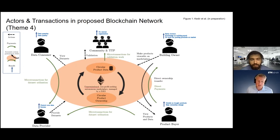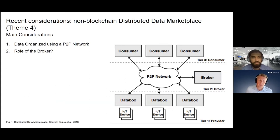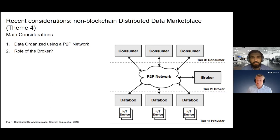We've also questioned whether blockchain is necessarily the right way to do this, given its significant environmental footprint. We've started thinking about perhaps a distributed database to create a distributed data marketplace. There's the data organization around a peer-to-peer network — examples would be the InterPlanetary File System or BigchainDB — so data is not stored on a central server but available to all who have rights to access it. We're also considering what the role of the broker would be in such a distributed data marketplace.